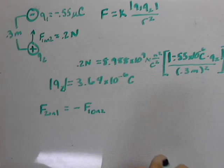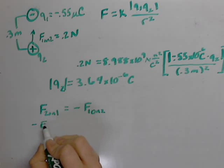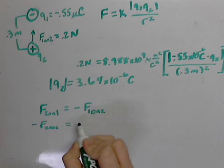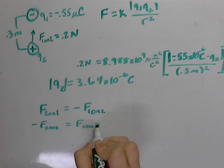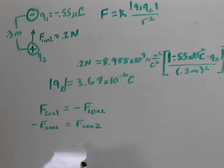We can say the negative of F of 2 on 1 is equal to F of 1 on 2. So we know that 0.2 equals the negative of F of 2 on 1, therefore F of 2 on 1 equals negative 0.2 newtons.